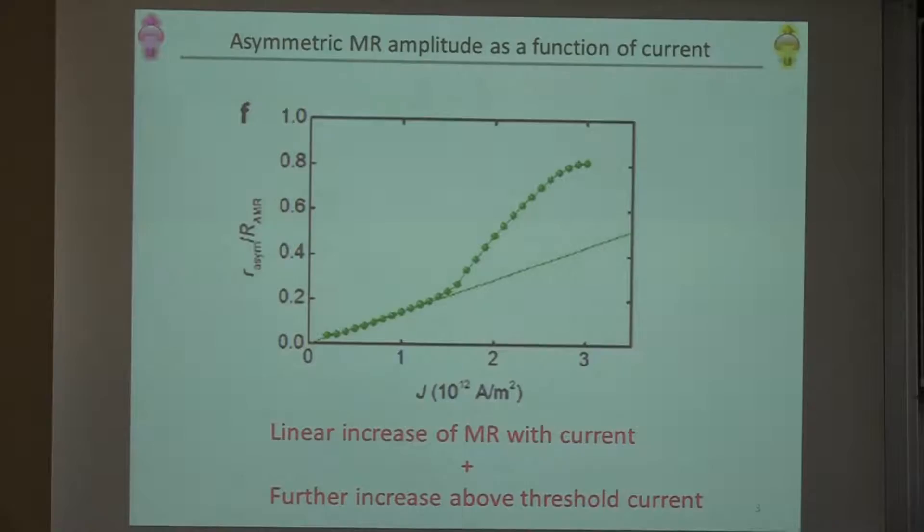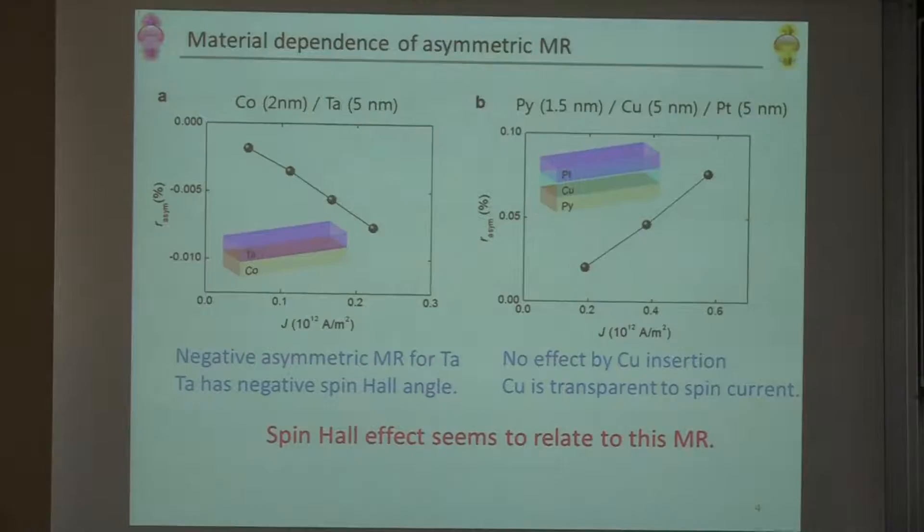So what's the mechanism? We tried to see the material dependence. We changed our normal material from platinum to tantalum, because this has an opposite spin-Hall angle. Then you see, now the asymmetric MR shows a negative sign. The other one is the insertion of copper layer between permalloy and platinum, and then there's almost no effect by this copper insertion. So everything shows maybe this is related to the spin-Hall effect.